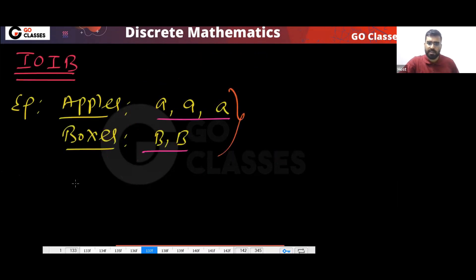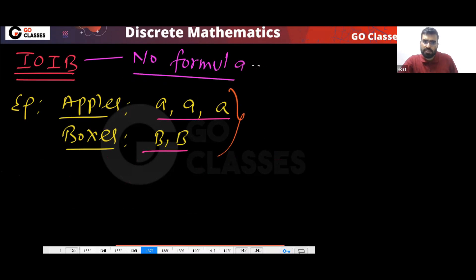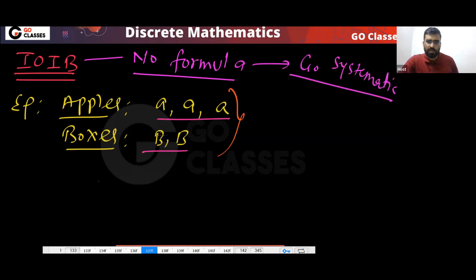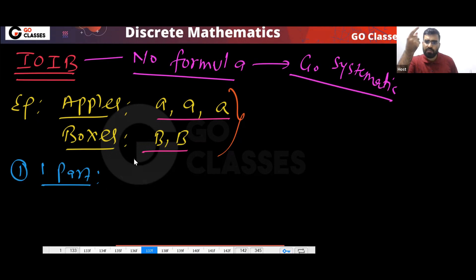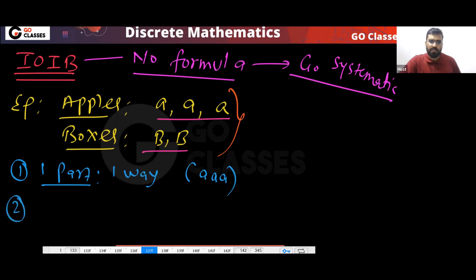There is no formula for this template. So what you should do is go in a systematic way — always go systematically. If you only use one part (one box), there is only one way, because all the apples will be together and boxes are the same — so it does not matter which box you choose.